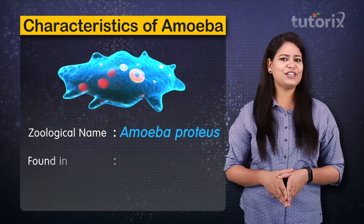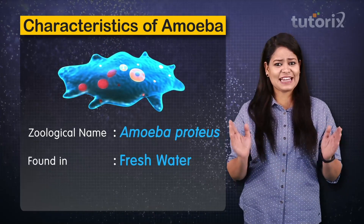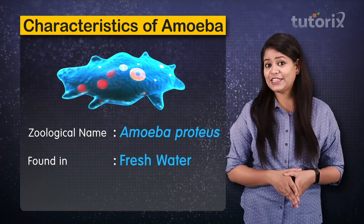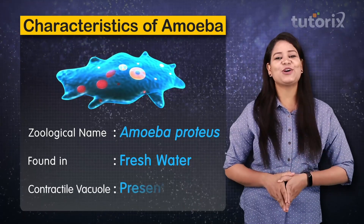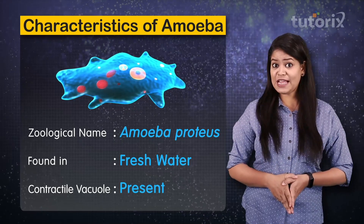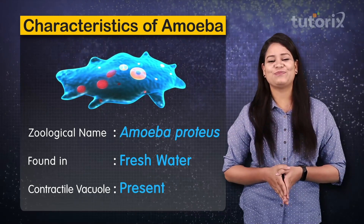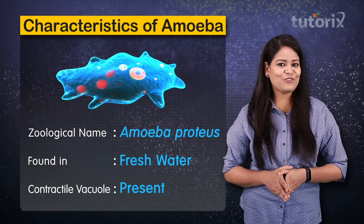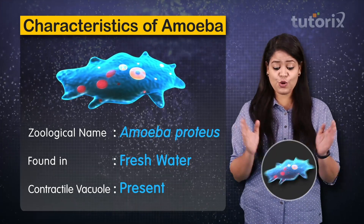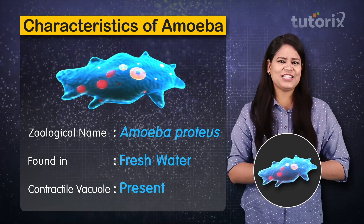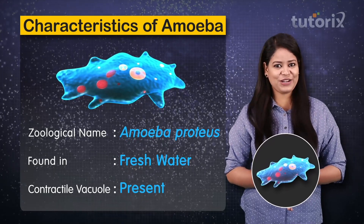Amoeba is found in fresh water, and just like all other fresh-water protozoans, amoeba also has a contractile vacuole which helps in osmoregulation. Since it is a member of order Lobosa, locomotion occurs through lobopodia — the blunt and broad pseudopodia.